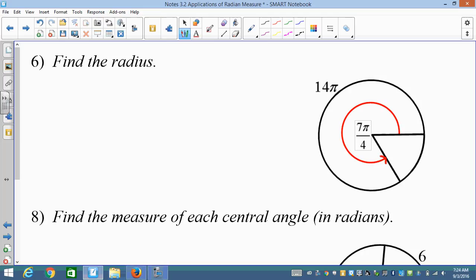Let's try another one. This time they ask you to find the radius. So they gave you the central angle and they gave you 14 pi. Still, S equals R theta. Plug in what you know. You know S is 14 pi. You don't know the radius, but you do know central angle of 7 pi over 4.